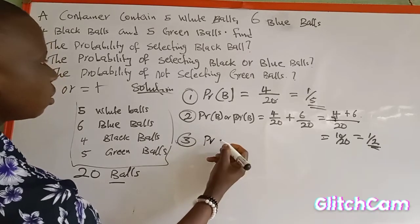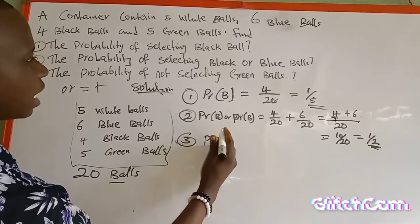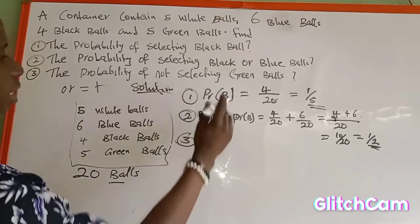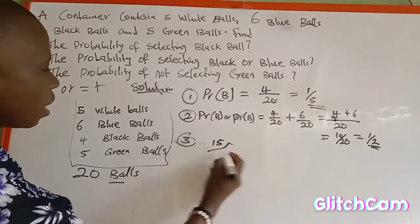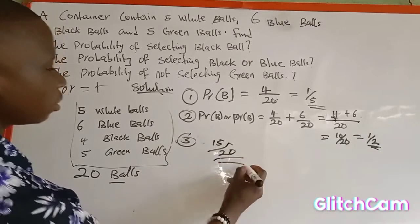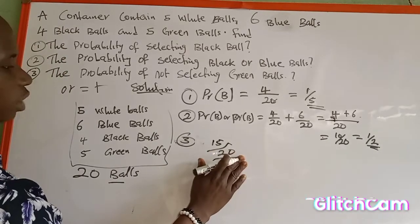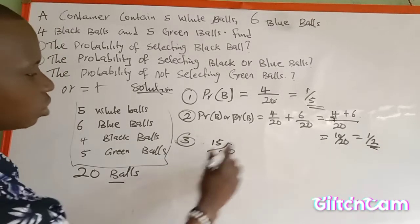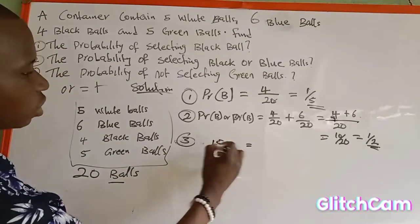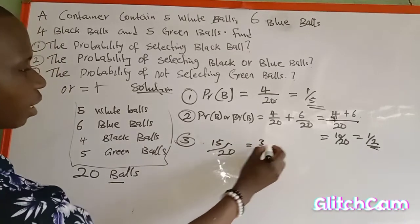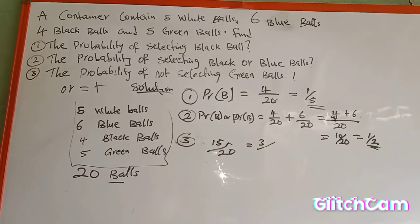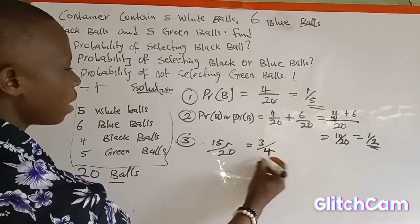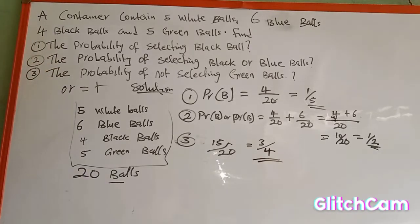So the probability of not selecting green is fifteen over twenty. This can be reduced: five goes into fifteen three times and five goes into twenty four times, giving us three over four. Thanks for watching and don't forget to subscribe to my YouTube channel.